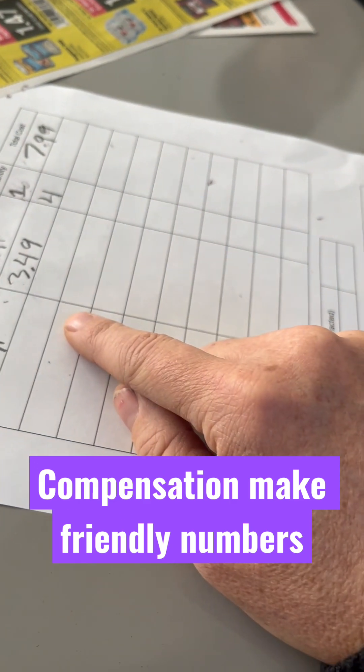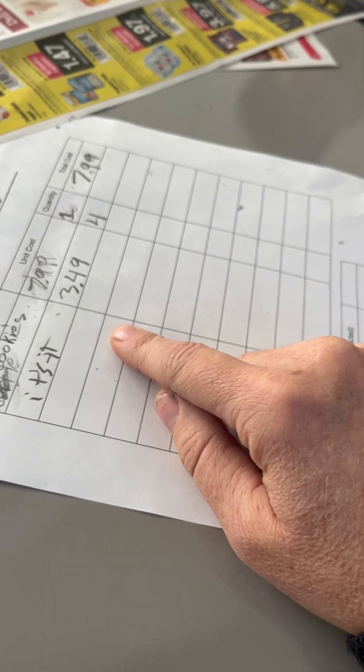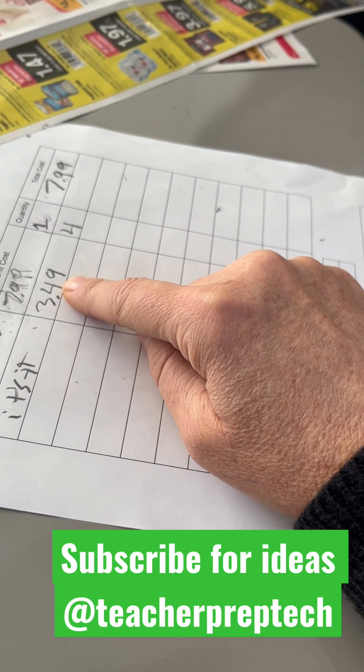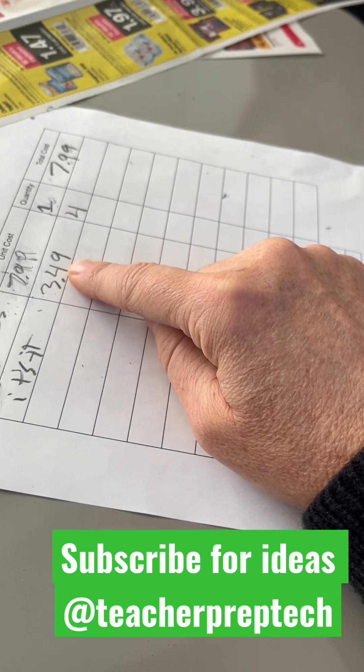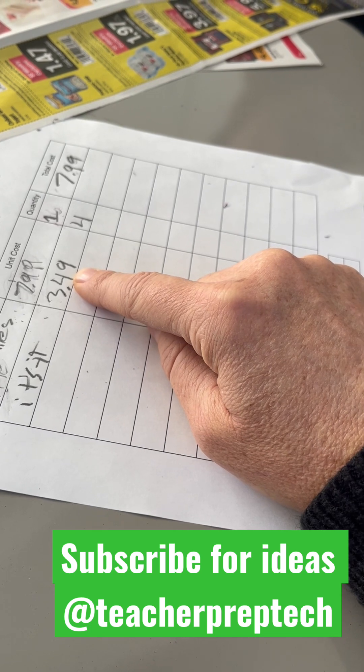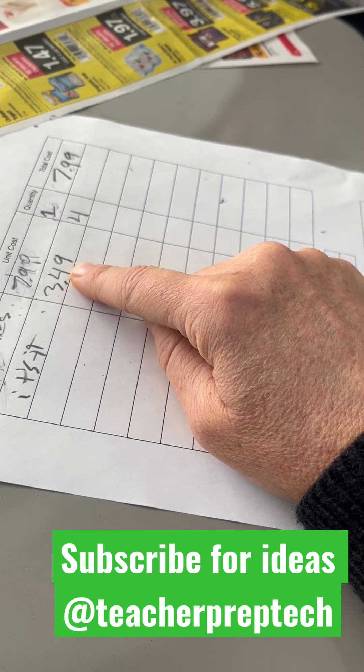So, $12 plus $2 is? $14. $14. And now let's subtract. Let's subtract extra cents. How many extra cents do they have? 4. Good. So, $13.96.